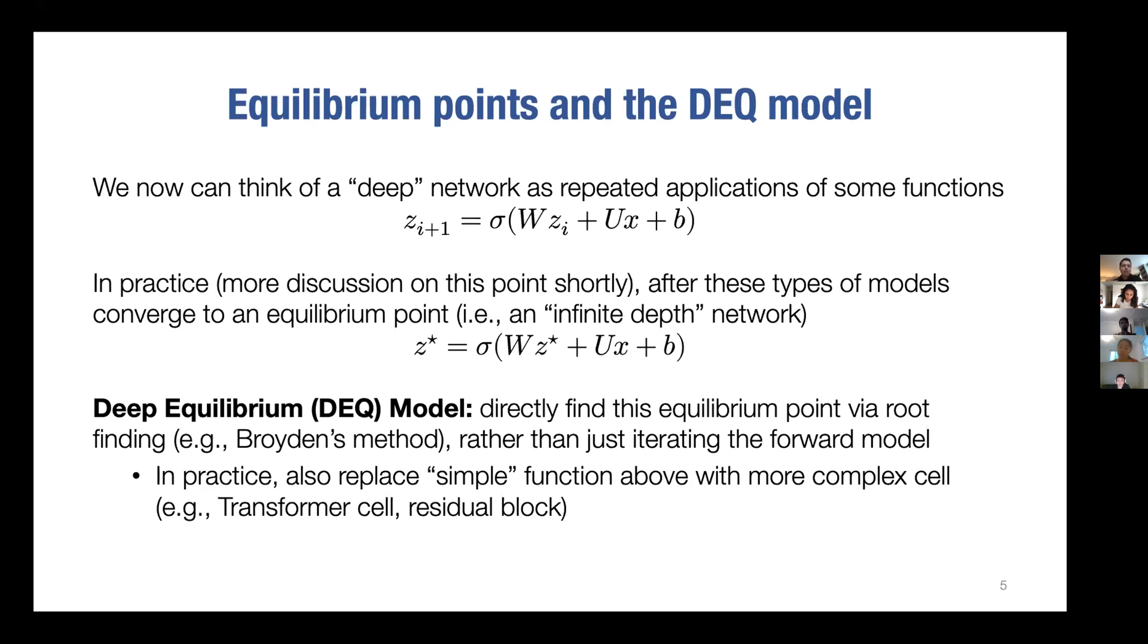If you keep doing this, what happens both in practice and in some cases in theory is that this process will converge to some fixed point z star, where if I apply this layer one more time it won't change. This is what we call a fixed point or an equilibrium point of this process, and you can think of z star as the settling point of an infinite depth deep network.